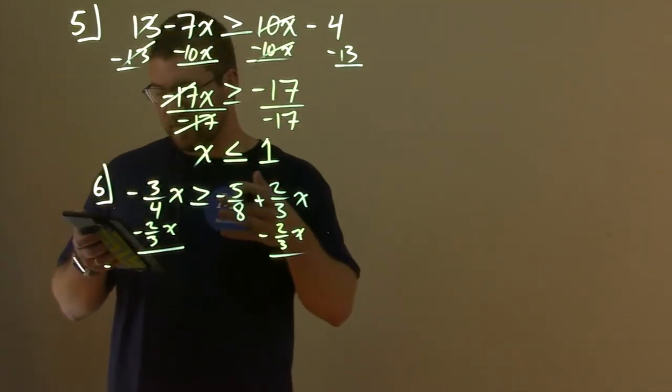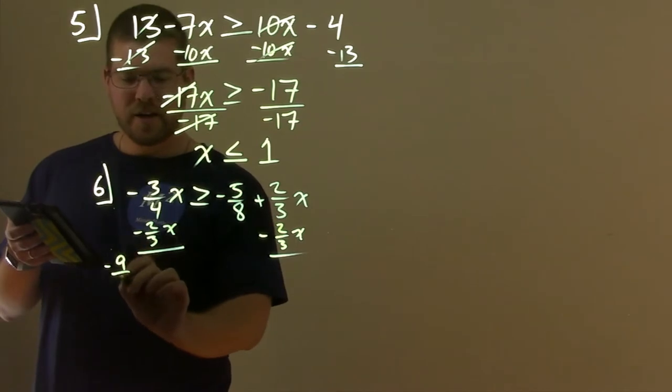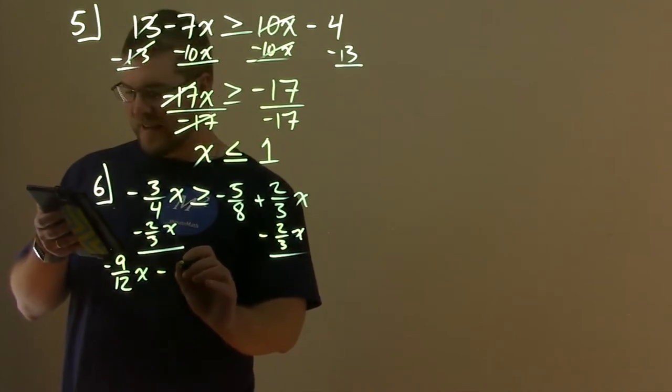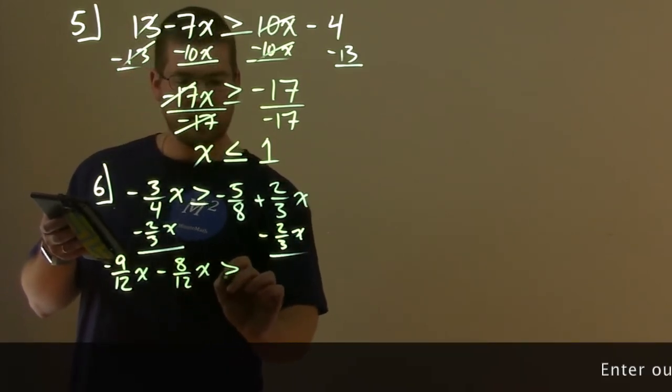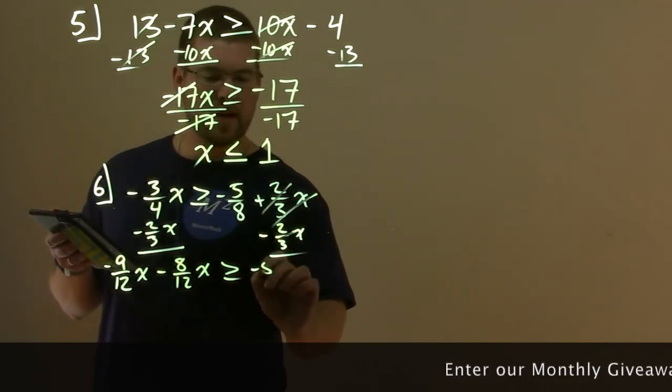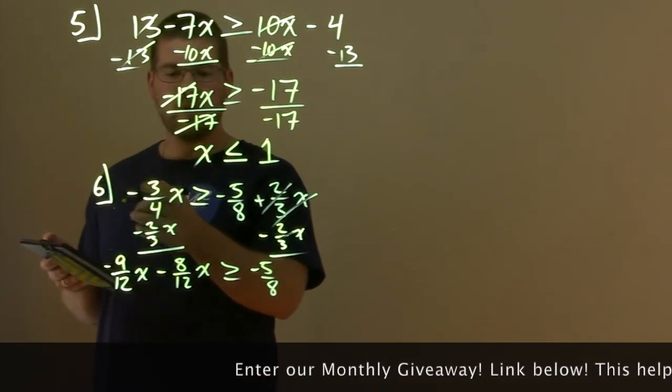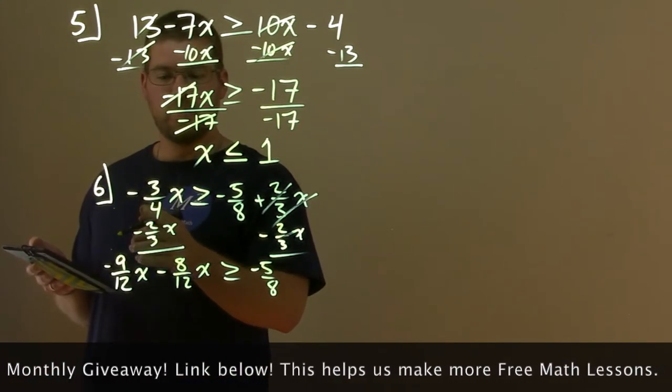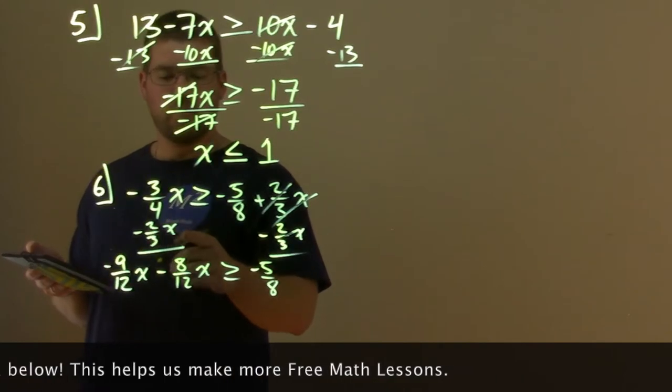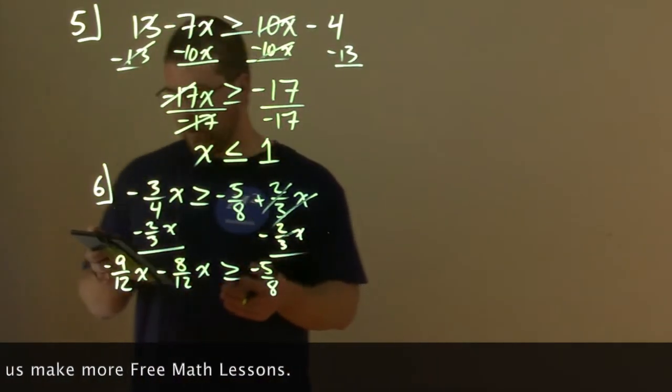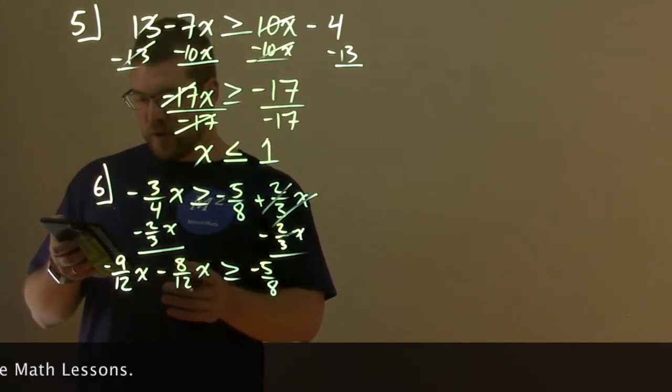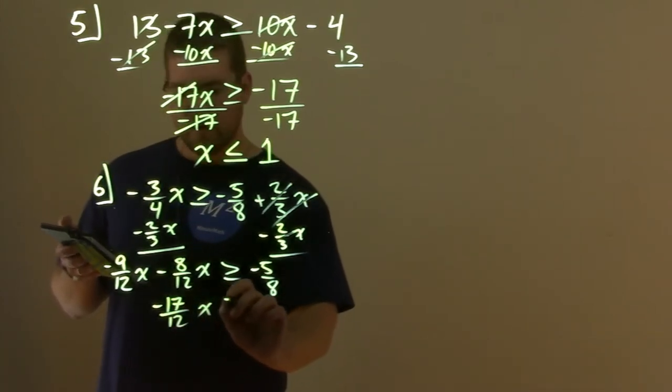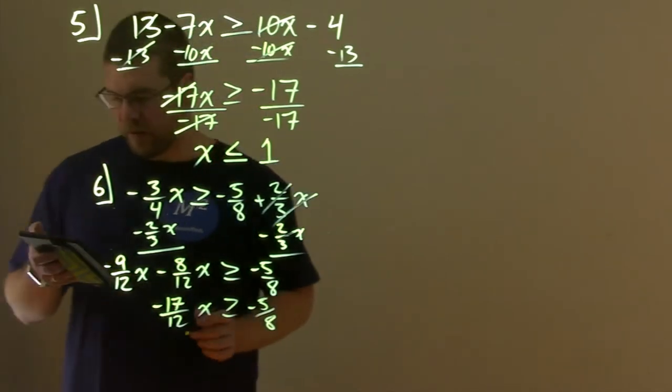If we got a like denominator, negative 3 fourths can be a negative 9 twelfths x. And then, negative 2 thirds can be a negative 8 twelfths x. These cancel here, and we're left with the negative 5 eighths. So, again, looking at this, we're going to find a common denominator. We multiply this one by 3 over 3, negative 3 fourths, and we got negative 9 twelfths. This one here, negative 2 thirds by 4 over 4, got us 8 twelfths. Now, we have a like denominator. We can add them. We can add the numerators, and negative 9 minus 8, or add in the negative, is a negative 17 over 12 x, which is greater than or equal to negative 5 eighths.